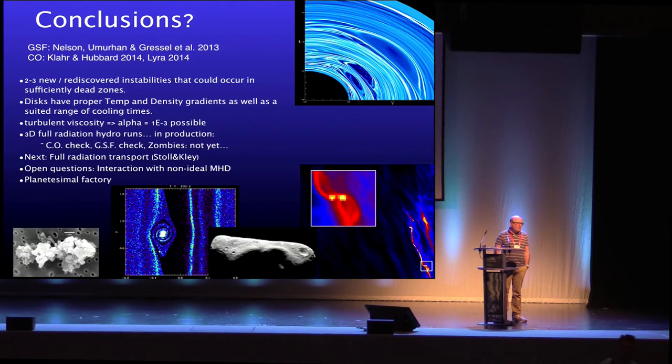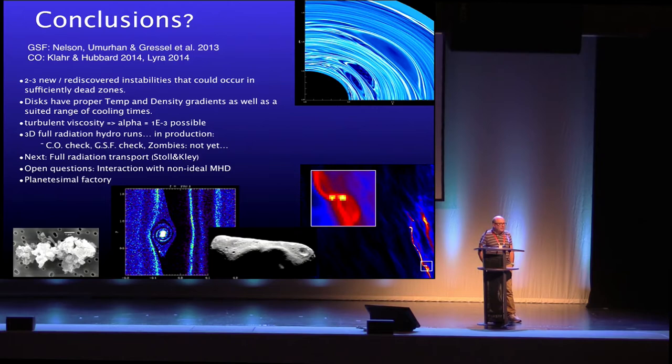Q: How important is the self-gravity of the disks you've been showing? A: In the simulations shown, this is already at relatively late stages when self-gravity is no longer so important — Toomre values of 10 and above. On the other hand, if you then go for the dust concentrations, that is a different question: the dust concentrations themselves can become gravitationally unstable.